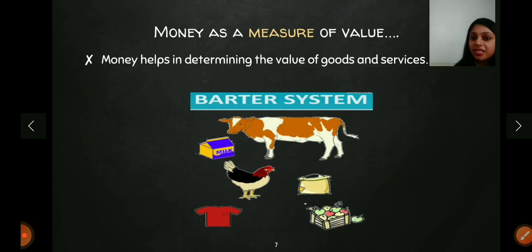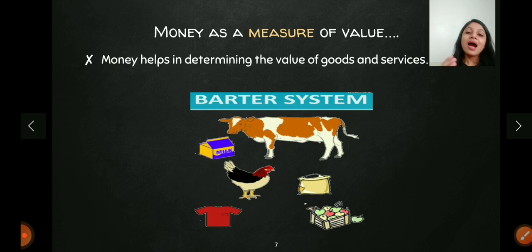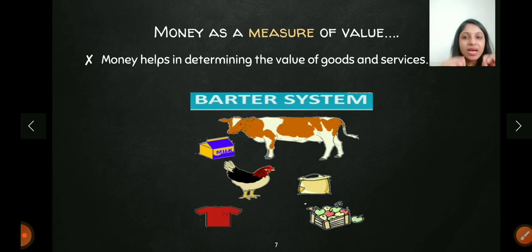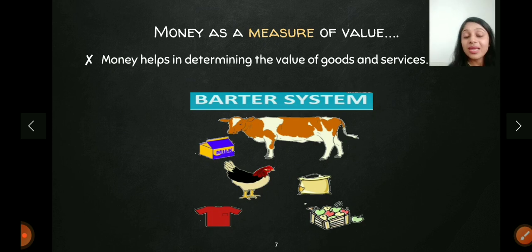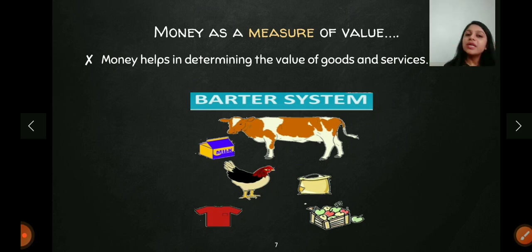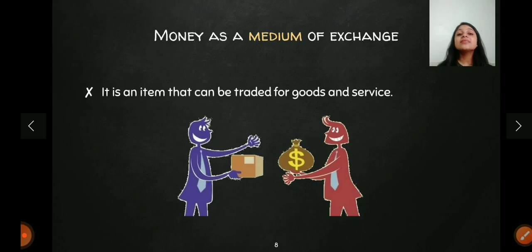The first function is money as a measure of value — it tells us the value of any item. For example, in the barter system, if I have a cow and the other person has rice, how much rice should be exchanged for a cow? It's very difficult. But money is a commodity whose value is more or less stable — its purchasing power does not change very frequently, unlike other commodities whose values change very often. Because money is a more stable commodity, we can use it as a measure of value.